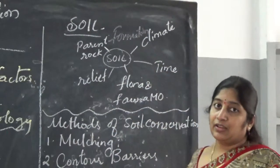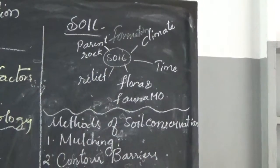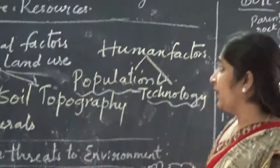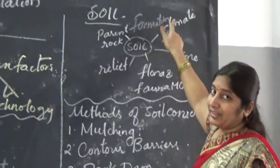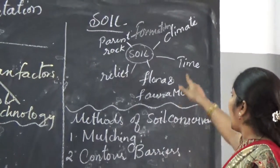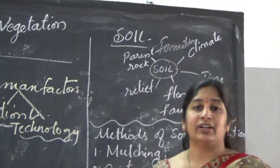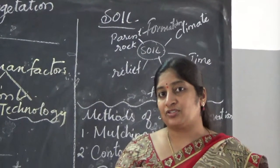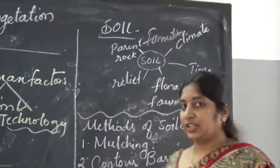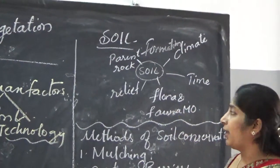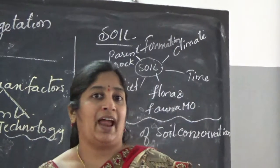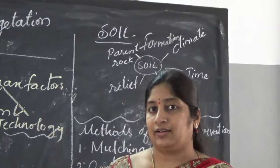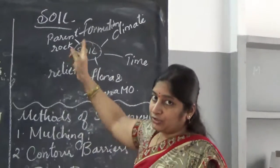The next factor is climate. We have different topographies — poles, hot regions, cold regions, moist regions, dry areas, and so on. Depending upon these, the climate will decide the type of soil. Then there is time — it will take some millions of years to form a small grain of soil because the process of weathering takes place over millions of years. Next, flora and fauna and microorganisms. Flora means plant species, fauna means animal species, and small microorganisms are present in the soil. These are also one of the reasons for the formation of soil.